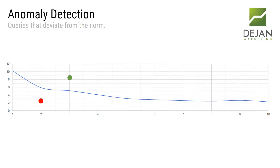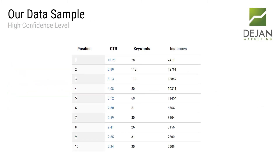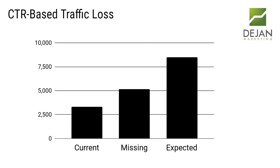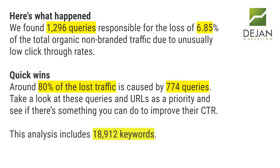The first exercise is to find anything that deviates negatively or positively. Here's our data sample — we have a high confidence level with a lot of keywords involved. What we found is that the CTR-based traffic loss in this case is over 5,000 clicks. We expected over 7,500 — close to 8,000 clicks in fact — and only got just over 2,500. So there was a significant amount of clicks missing from the SERPs. Close to 1,300 queries were responsible for the loss of nearly 7% of the total organic non-branded traffic.